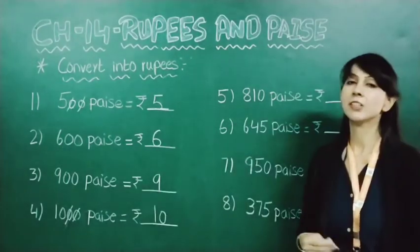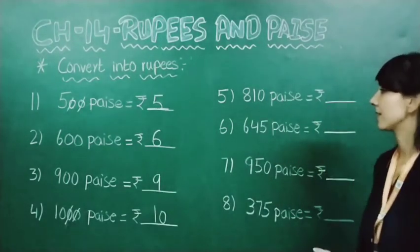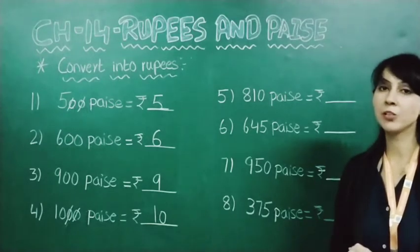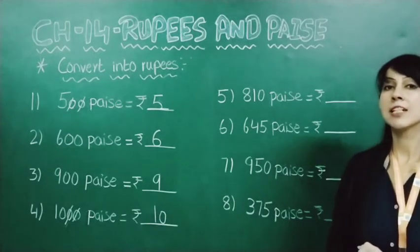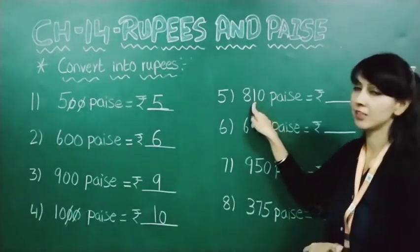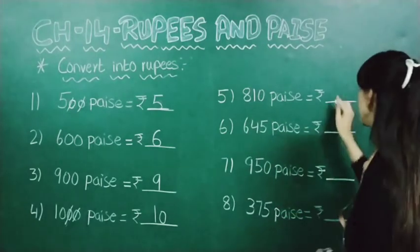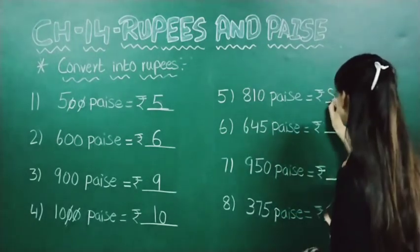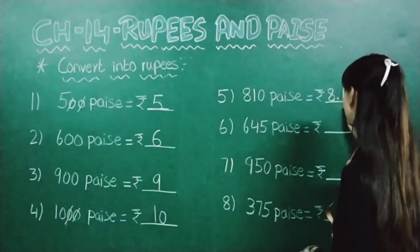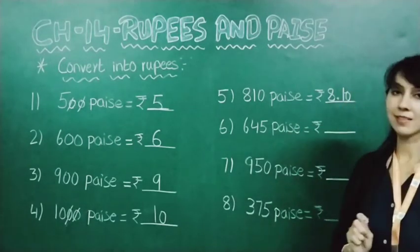Now let's see another one: 810 paise. Here zeros are not there, so what we will do? We will just place a point after the second digit from the right side. So this will become 8, then point, then 10 — that is 8 rupees 10 paise.